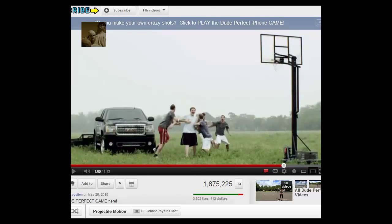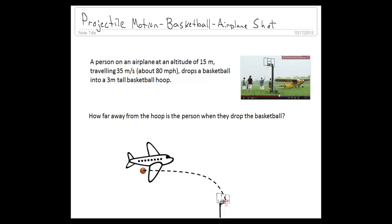In this particular shot, we have a person in an airplane and they shoot the basketball from the airplane and it drops into the basketball hoop. To put some numbers to this, let's say the airplane is initially at an altitude of 15 meters and traveling at 35 meters per second, about 80 miles per hour. And it drops the basketball into a 3 meter tall basketball hoop.